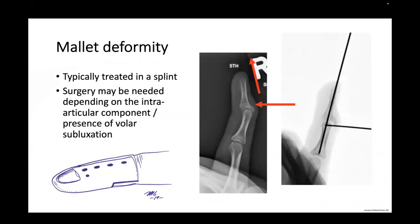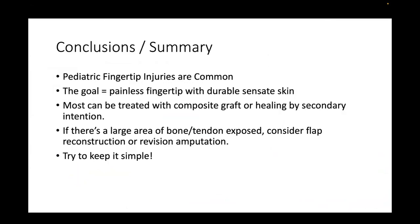Mallet deformities can typically be treated in a splint; surgery may be needed depending upon the intra-articular component and the presence of volar subluxation. In summary, pediatric fingertip injuries are common. The goal is a painless fingertip with durable, sensate skin. Most can be treated with a composite graft or healing by secondary intention. If there is a large area of bone or tendon exposed, consider flap reconstruction or revision amputation and try to keep it simple.